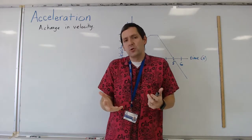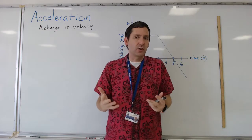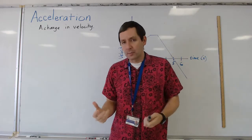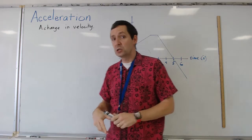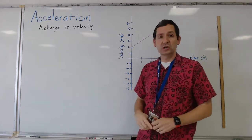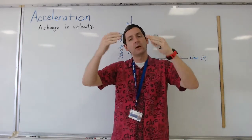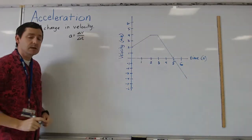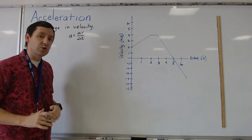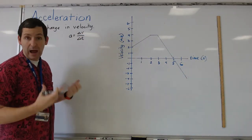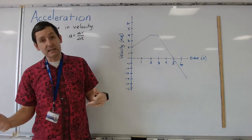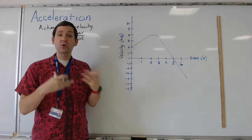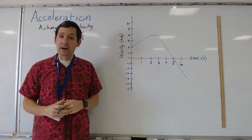This can be used in simple questions to calculate an average change. The formula we'll usually use for average acceleration is the change in velocity over the change in time. That can be used in a situation where you have a beginning speed and an ending speed and you know how much time it took, and you can use that to find acceleration.